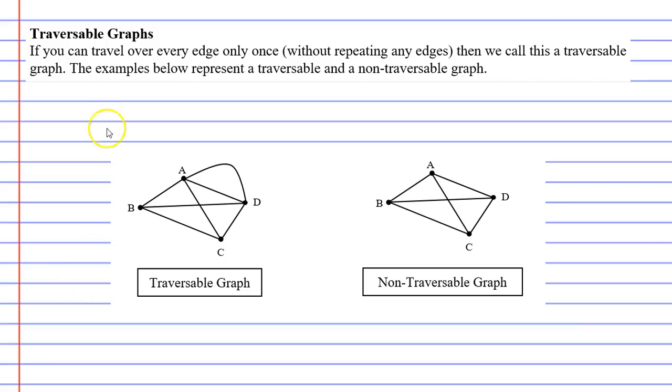So let's do that now for the traversable graph. Starting at vertex B, I can draw along each edge without taking my pen off the paper once and I will have covered every single line. So this is a traversable graph.